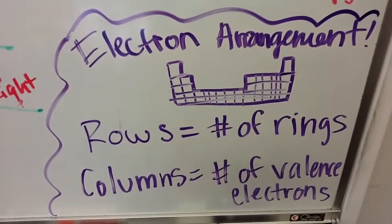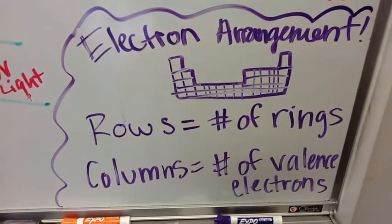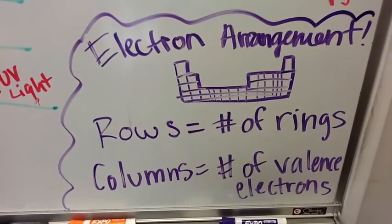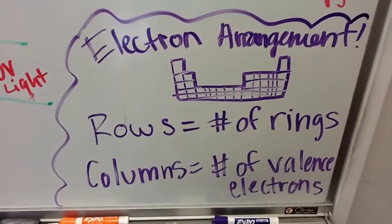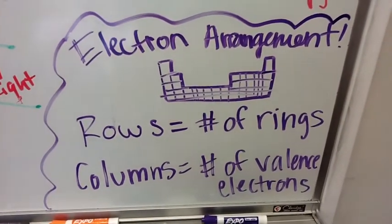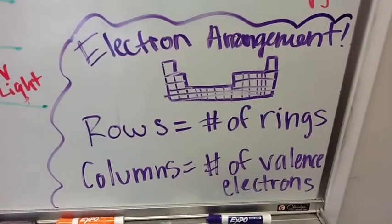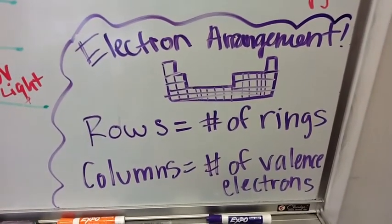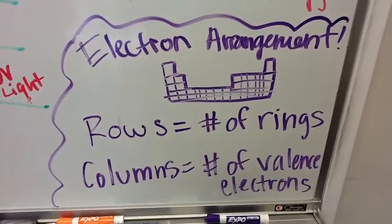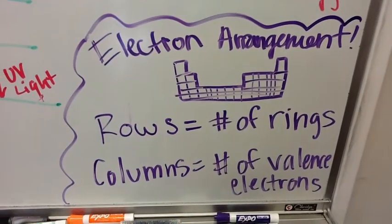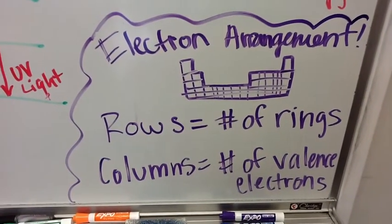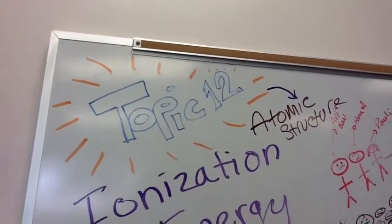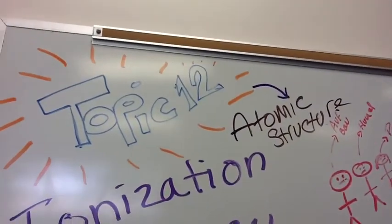The row an element is in represents the number of rings of electrons the atom has, and the column represents the number of valence electrons — electrons in the last ring. If the charge is plus one, the atom has one fewer electron; if the charge is minus one, it has one more, and so on. Topic 12 is the atomic structure.